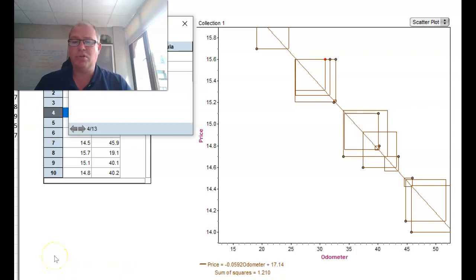I'm going to pause it there for you all to discuss who's got the best line, who's got the best sum of squares. Don't move your line around yet, just from your first movable line who's got the best line. Has anyone beaten me? I had 1.210. Pause the video and have a chat.